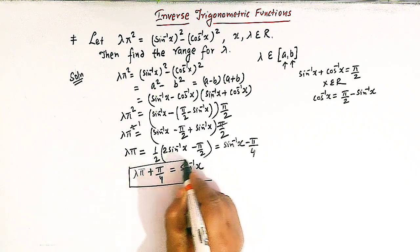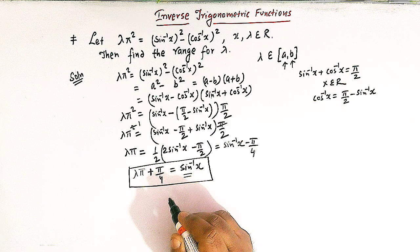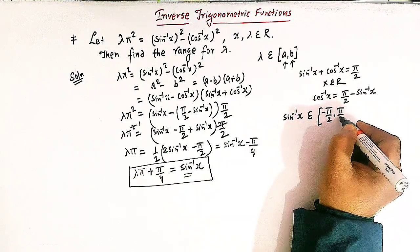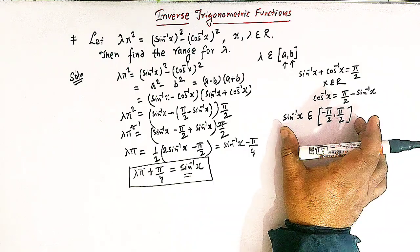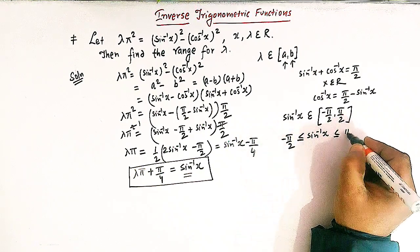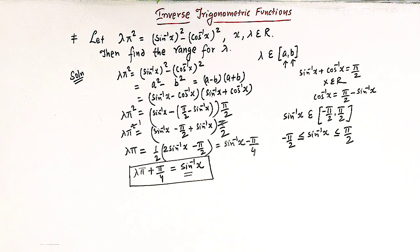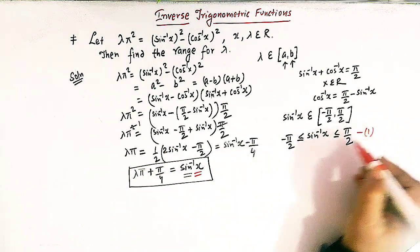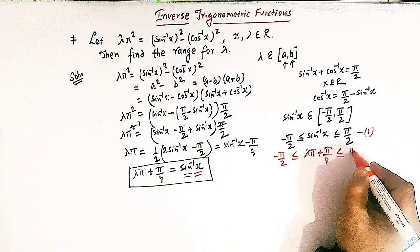This is an important expression. We now make use of the range of sin⁻¹x. We know that sin⁻¹x belongs to the interval [-π/2, π/2]. So we can write: -π/2 ≤ sin⁻¹x ≤ π/2. The equality sign is included because the interval is closed from both sides. Substituting sin⁻¹x = λπ + π/4, we have: -π/2 ≤ λπ + π/4 ≤ π/2.